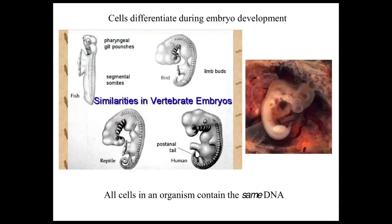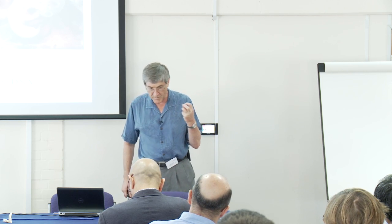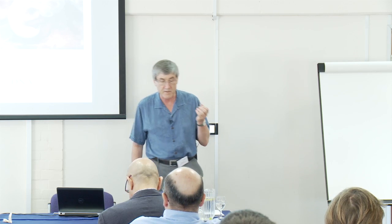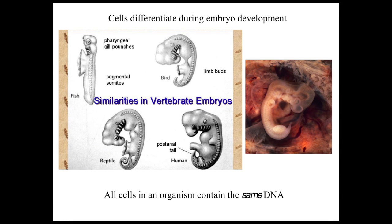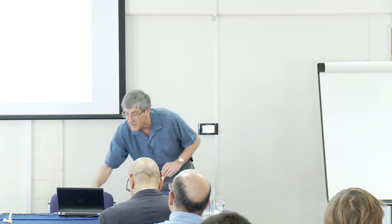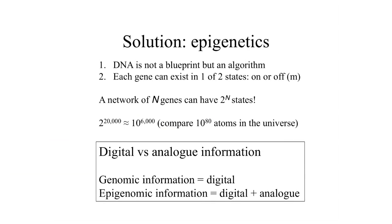A clue comes from the developing embryo. All cells in your body contain the same DNA, and yet these cells are different. When the embryo starts out, each cell is pluripotent and can develop in a variety of ways into kidney cells, brain cells, liver cells — all with the same DNA. Although genetically identical, not all genes are switched on at the same time; the way the embryo develops has to do with which genes are switched on and which are switched off.